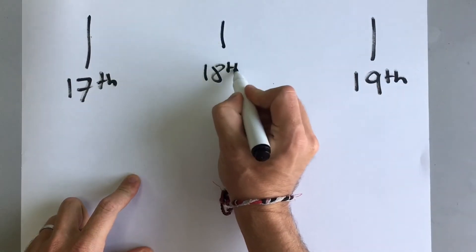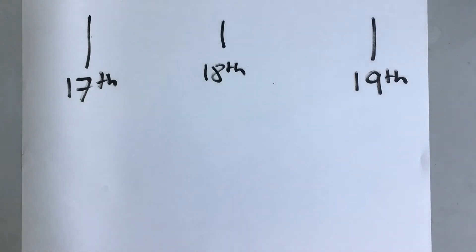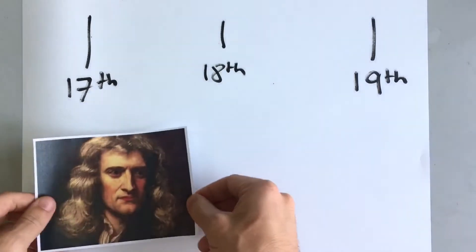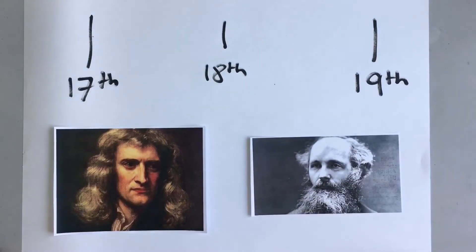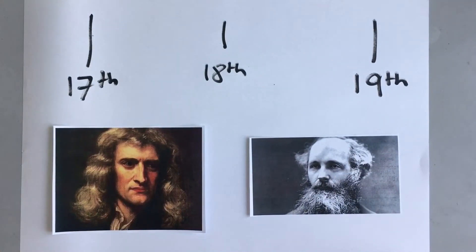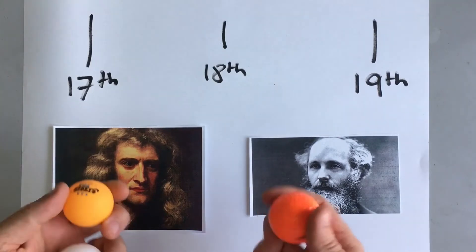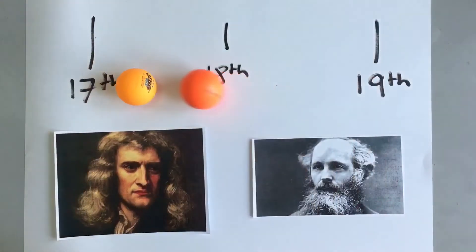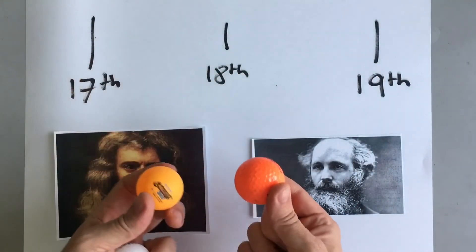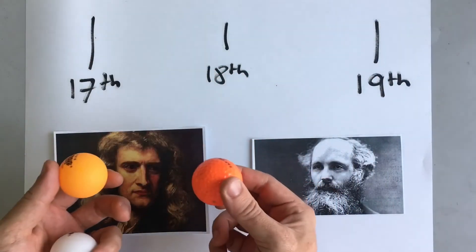We had incredible scientists like Isaac Newton, and later on, James Clark Maxwell. Isaac Newton taught us all about how things interact with each other and mechanics. If we roll one ball and it collides with the other ball, then we can predict what speed they will move off at later.